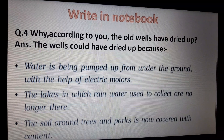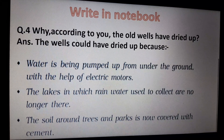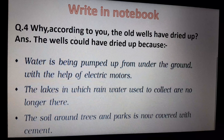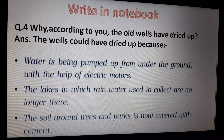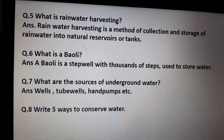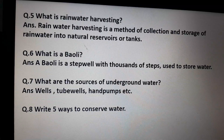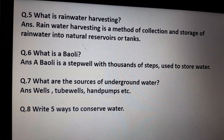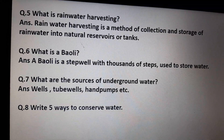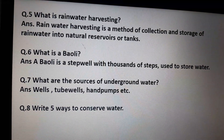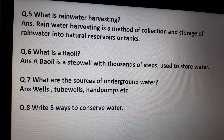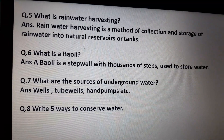Earlier you had done three questions in your notebook; now some more are there. The fourth question is: why, according to you, have the old wells dried up? The answer is that wells could have dried up because water is being pumped out from the ground. Next: what is rainwater harvesting? Rainwater harvesting is a method of collection and storage of rainwater into natural reservoirs or tanks. What is a bauli? A bauli is a step well with thousands of steps used to store water. What are the sources of underground water? Wells, tube wells, hand pumps, etc. Finally, write five ways to conserve water — you have to write this answer by yourself.